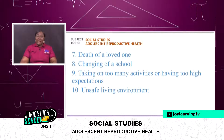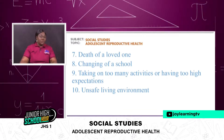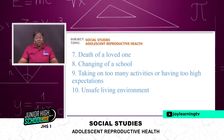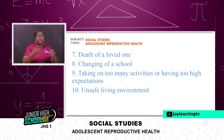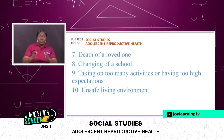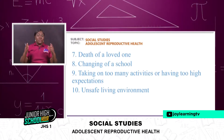The death of a loved one — adolescents may not speak when they have lost a loved one; they may be thinking about it, and this also stresses them. Changing of school — maybe mommy or daddy hasn't got enough money and decides to move you to another school. Parents should explain to the adolescent the reasons so as not to stress them. Taking on too many activities or having too high expectations also stresses the adolescent.